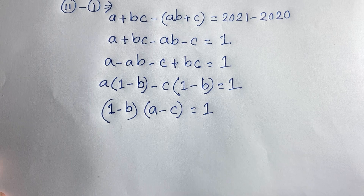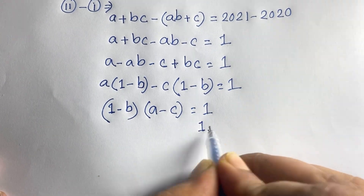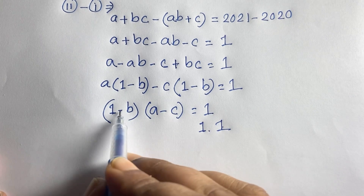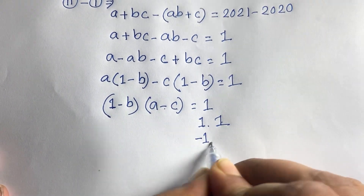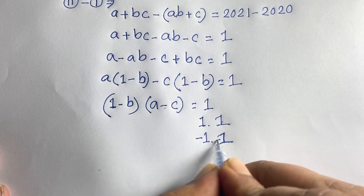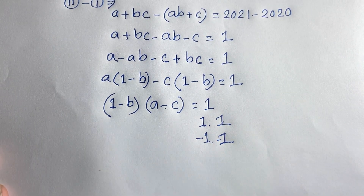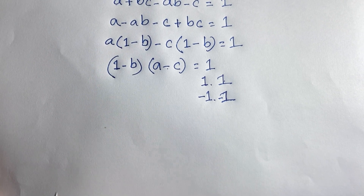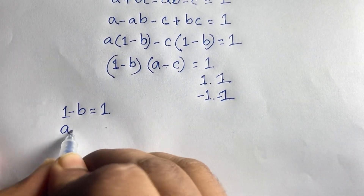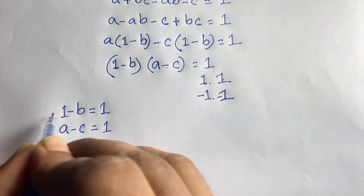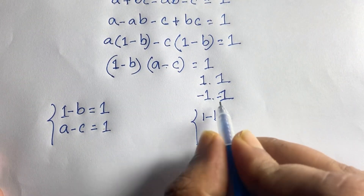Now we find two terms whose product is 1. This can be 1 times 1 equals 1, or minus 1 times minus 1 equals 1. So there are two cases. Case one: (1 - b) = 1 and (a - c) = 1. Case two: (1 - b) = -1 and (a - c) = -1.